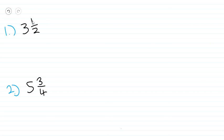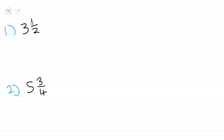Starting off with number one, we have three and a half, or three and one over two. Before we can do anything with this mixed number, we have to first convert it into an improper fraction. We do this by multiplying the denominator, which is two, by the whole number, which is three, and then adding that product to the numerator, which is one.